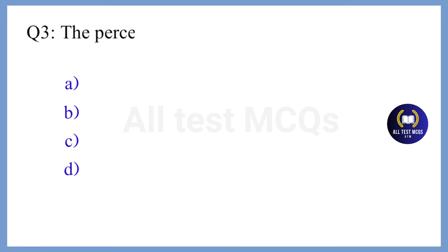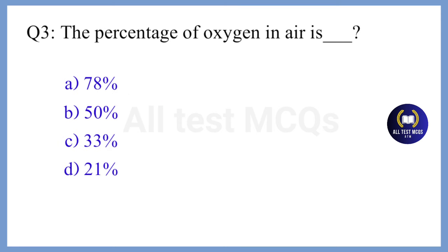Question 3. The percentage of oxygen in air is — the correct answer is Option D. 21%.